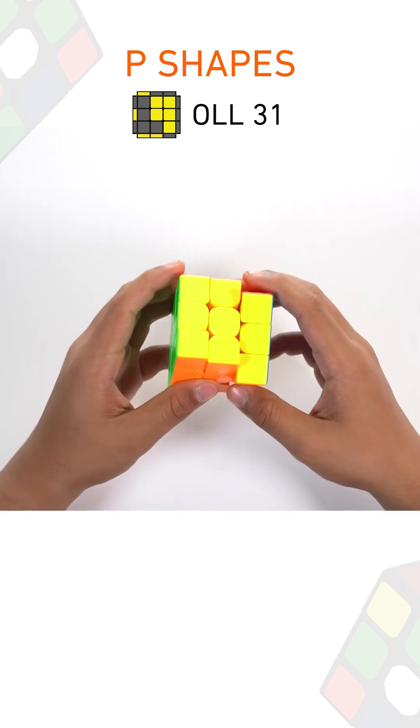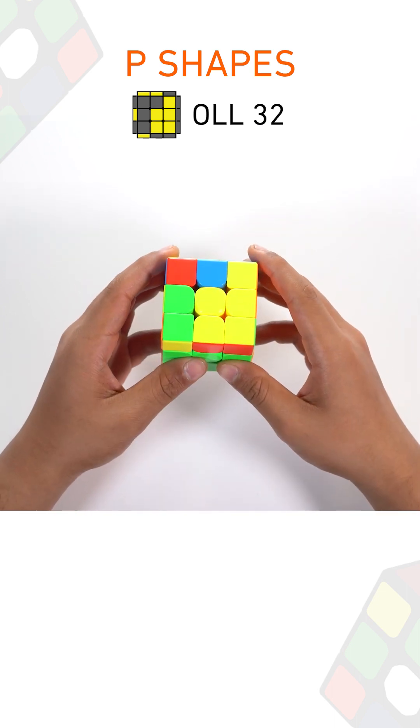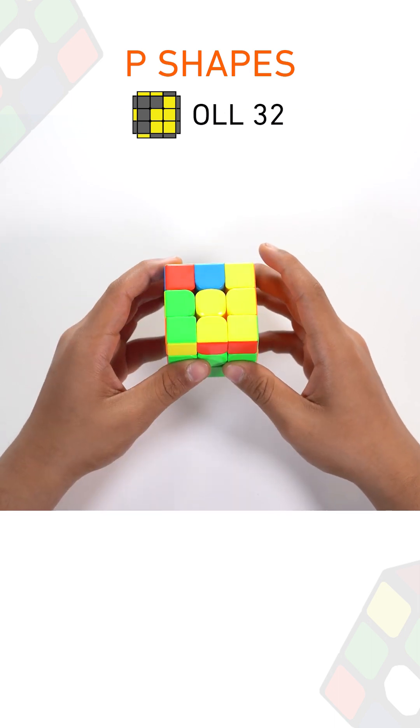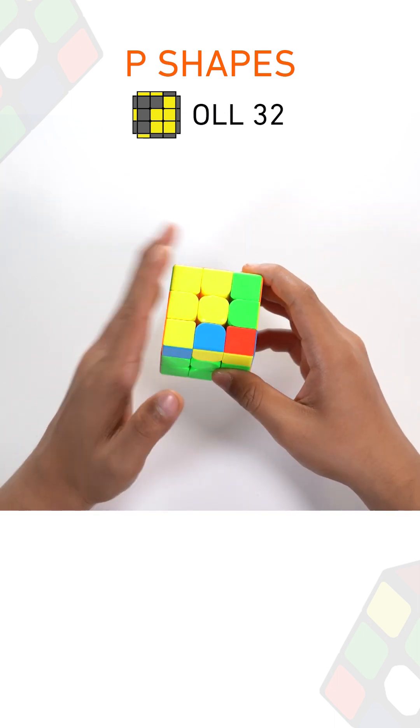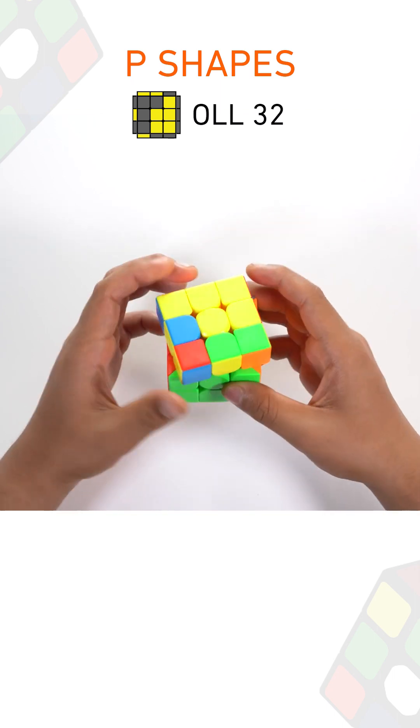The last case in the P-shape is again similar to the previous one we did. Instead of having the P-shape on the right side, we have it on the left side. So we'll have to hold it so that this block is facing the back side.